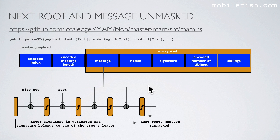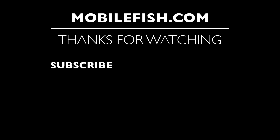This is the final step. After the signature is validated and the signature belongs to one of the three leaves, the mask message is absorbed and the transformation function is applied. This function outputs the unmasked next root and the unmasked message. Thanks for watching. I hope you enjoyed the video. Please hit the like button and don't forget to subscribe. If you have questions, leave your comments below — I'll do my best to answer them.